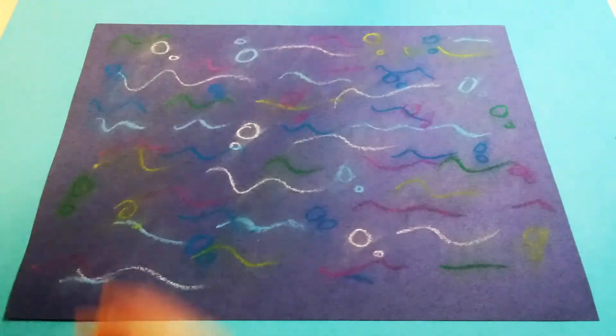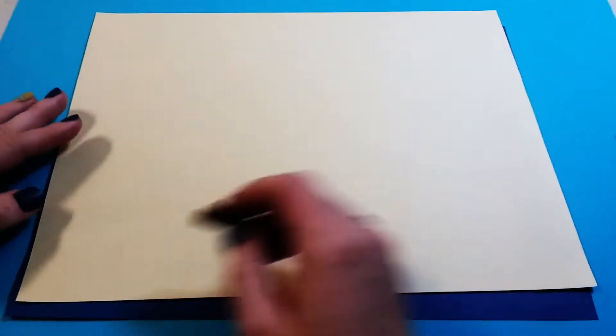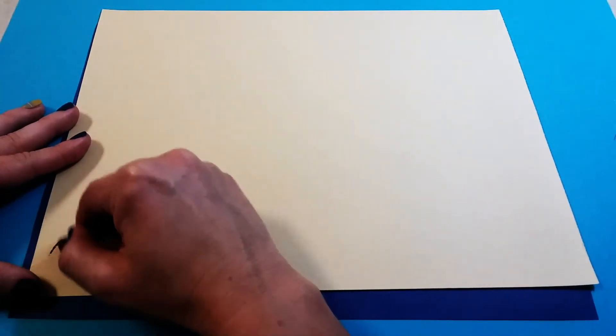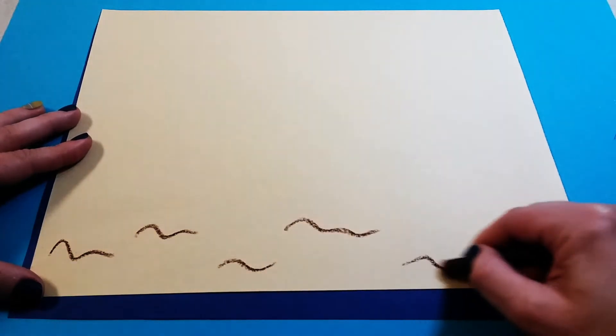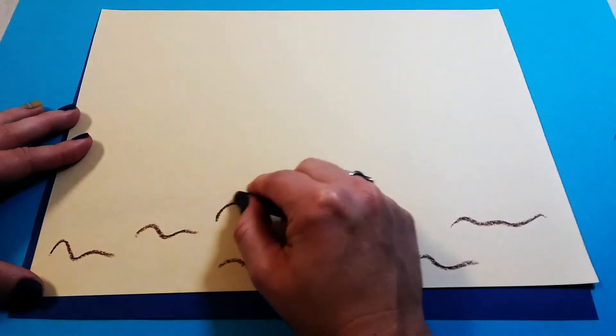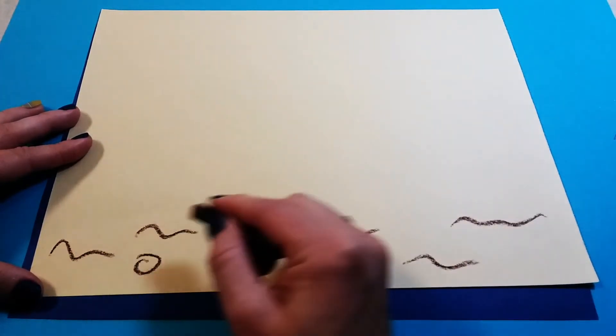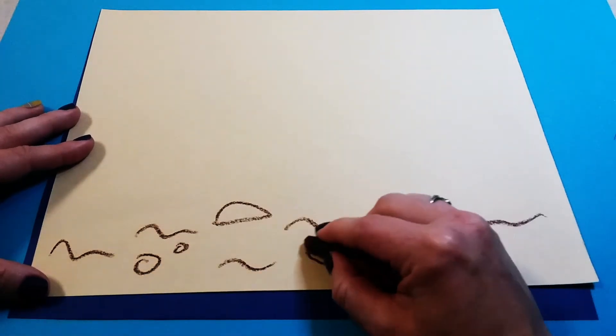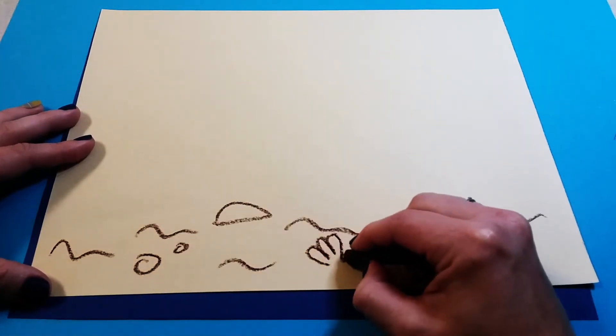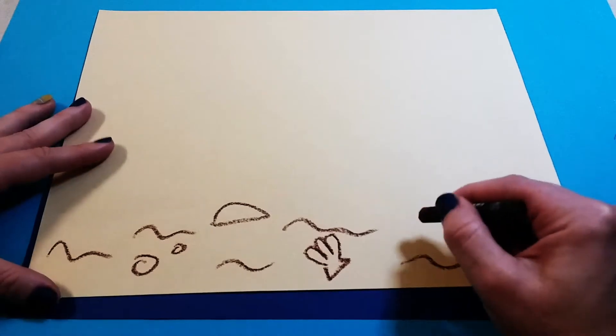Next you're going to get a piece of manila paper, so this is kind of like a tan color, and you're going to use a brown oil pastel. And along the bottom here you're going to draw again some wavy lines. But this time you might make some rocks or little pebbles or you could do some seashells and just kind of decorate it like it's the bottom of the ocean.